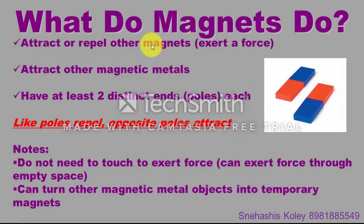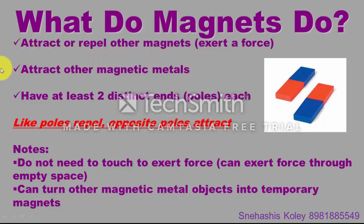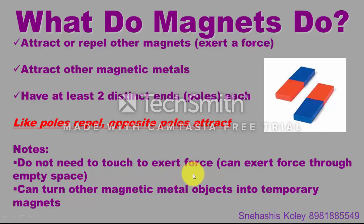Here are a few properties of magnets. First, a magnet attracts or repels other magnets: like poles repel and opposite poles attract. Second, a magnet attracts other magnetic materials, which is why we divide materials into magnetic and non-magnetic categories. Third, a magnet must have two distinct poles — monopoles do not exist. Fourth, to apply magnetic force, magnets do not need to touch each other, so it is a non-contact force. Fifth, magnets can turn magnetic materials like iron, nickel or cobalt into temporary magnets.